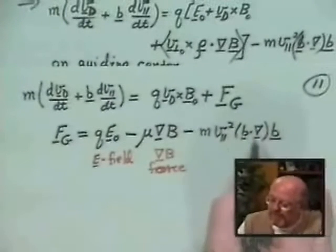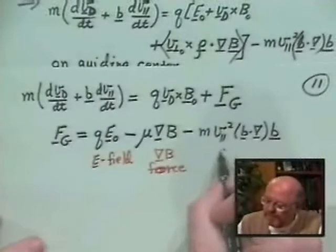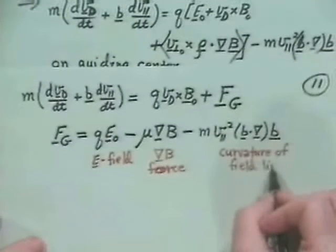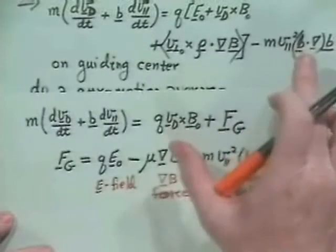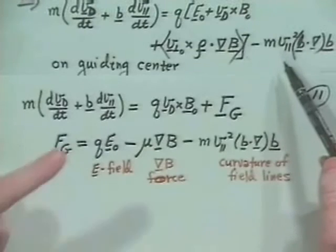And this one came from averaging this v cross rho dot grad b, it turns out. This particular average here gives identically that term. And then also we have an m v_parallel squared times b dot del b. Now, it turns out, so let me label these. This is the E field force. This is a grad B force. You remember of our various components of the tensor gradient of the vectorial field b, the gradient of the amplitude or the modulus of b was the density of field lines. And this thing is actually the curvature of the field lines.